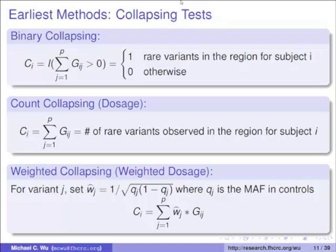People extended this further by creating a weighted dosage where rarer variants are up-weighted for their effects — reflecting the evolutionary intuition that a rarer variant might have a larger effect. These were some of the initial methods developed, but they had a number of huge limitations.